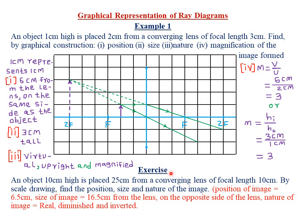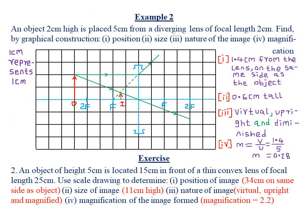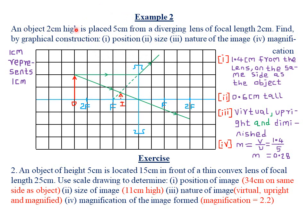I have an exercise here that I recommend you try to gauge whether you have understood this example. Next we look at our second example, which reads: an object two centimeters high is placed five centimeters from a diverging lens of focal length two centimeters.